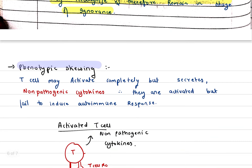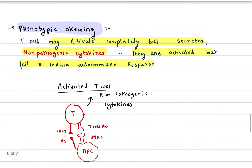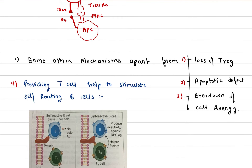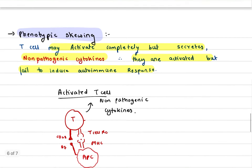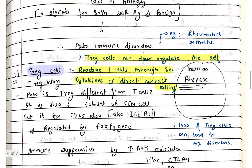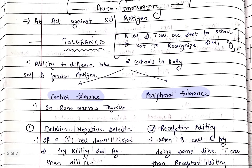The next mechanism is ignorance: self-reactive T cells may never encounter the self-antigen they recognize and therefore remain in a state of ignorance. After that is phenotypic skewing, where T cells may activate completely but secrete non-pathogenic cytokines, so they are activated but fail to induce autoimmune responses. These are the mechanisms of peripheral tolerance.